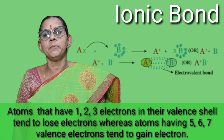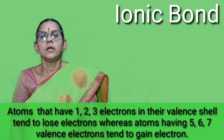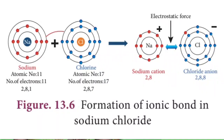Ionic bond is formed mainly between a metal atom and a non-metal atom. For example, sodium chloride — sodium is a metal. Sodium has atomic number 11, so electrons are distributed as 2, 8, 1. The outermost valence shell has 1 electron, so it is unstable.